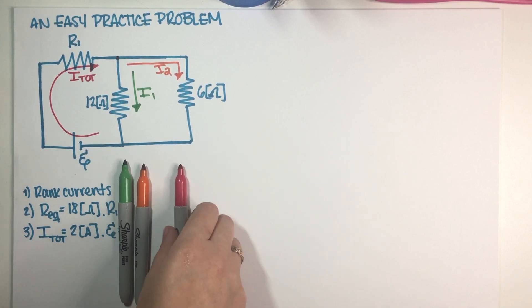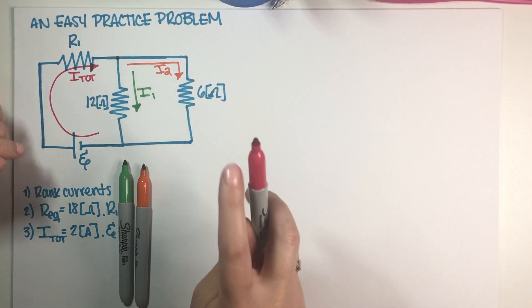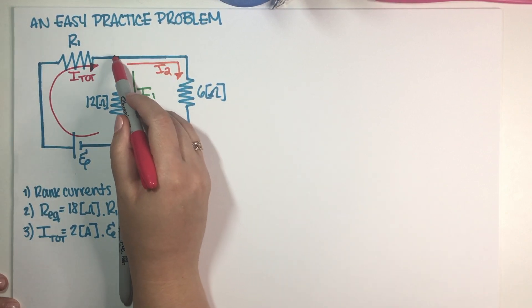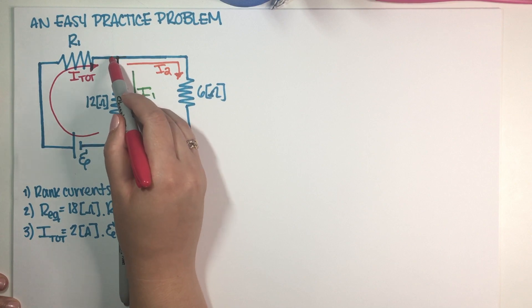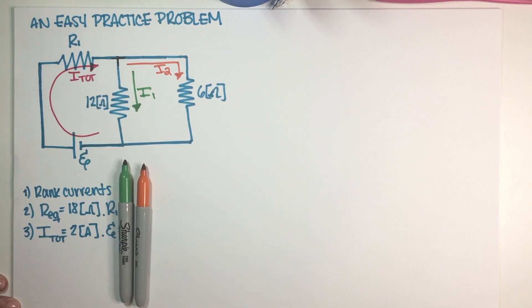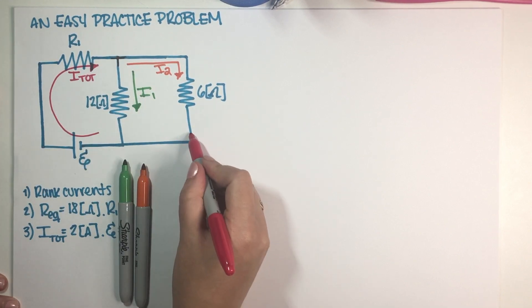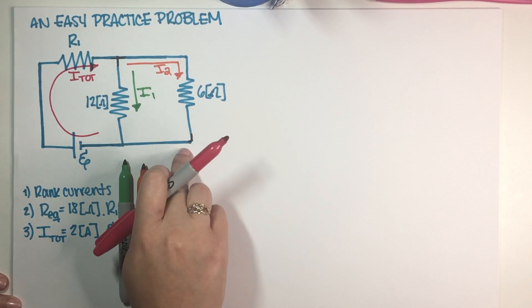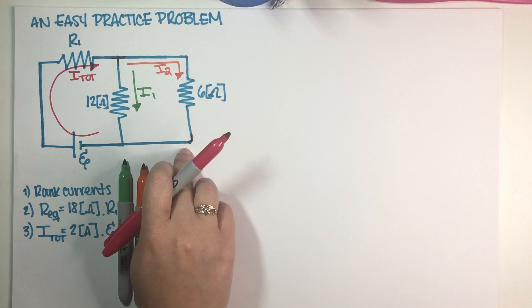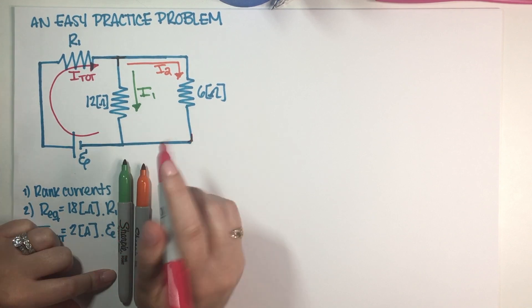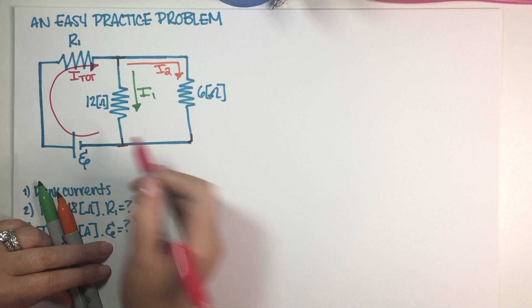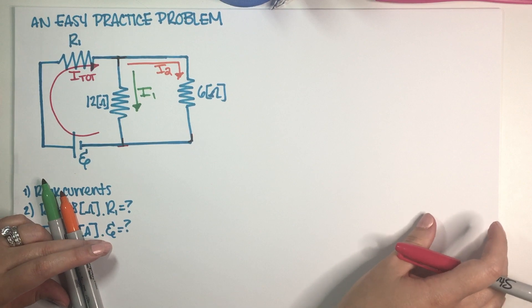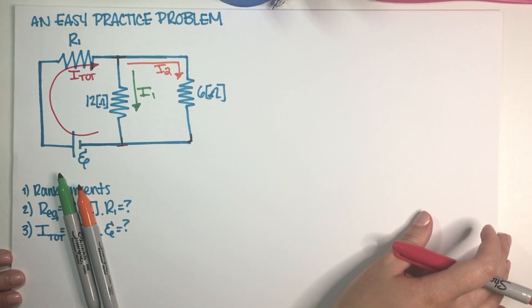A junction is wherever two or more wires are combined. This point is a junction because we have at least two wires meeting here. But these 90-degree corners are not junctions — those are just the same wire changing direction. We don't have two or more wires meeting there, so they are not junctions. It has to be two or more wires to qualify as a junction.